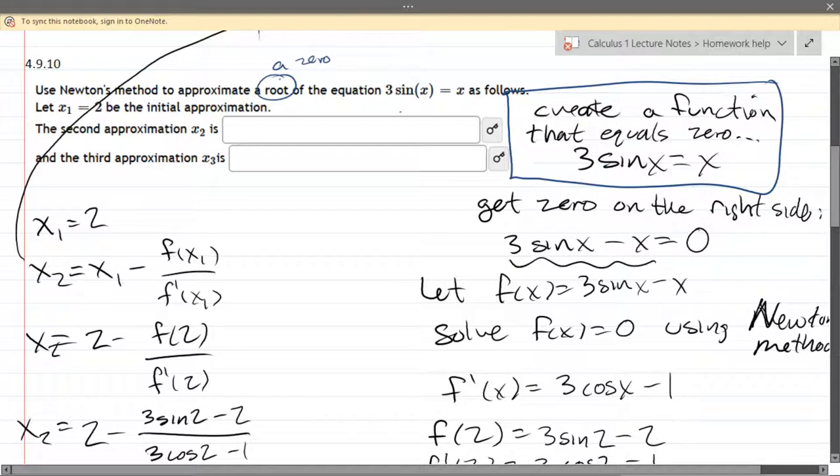We can subtract either the left to the right or the right to the left. It doesn't matter, so it's less rewriting to just subtract the x to the other side. I went ahead and did that right here. So now we have an equation with one side equaling zero.